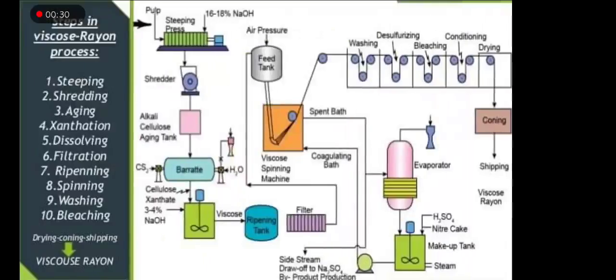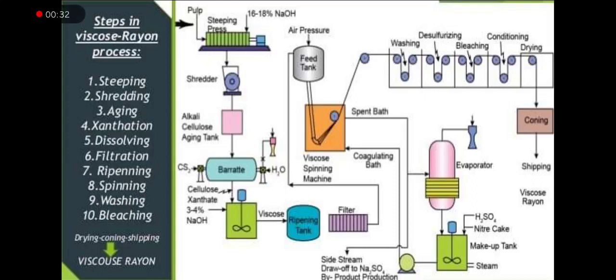This is the flow chart of the process to make rayon. You can easily see the steps: steeping, shredding, aging, xanthation, then dissolving, filtration, ripening, spinning, washing, and then bleaching. You have this figure in your book as well in a very detailed form.